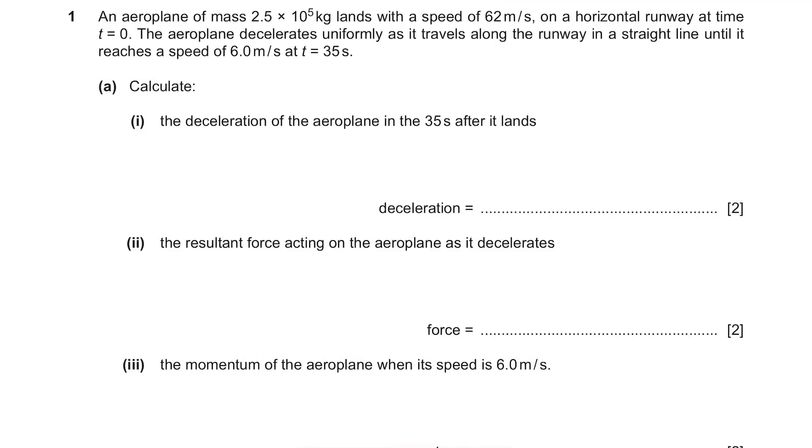The aeroplane decelerates uniformly as it travels along the runway in a straight line until it reaches a speed of 6.0 m per second at t equals 35 seconds.